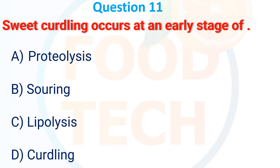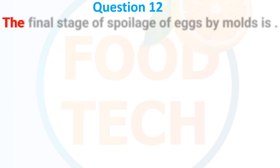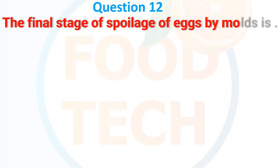The answer is A, proteolysis. The final stage of spoilage of eggs by molds: A, black rot; B, pink rot molding; C, fungal rotting; D, superficial fungal spoilage. The answer is C, fungal rotting.